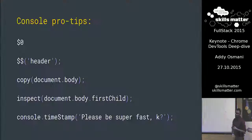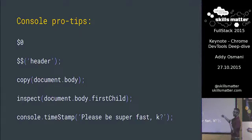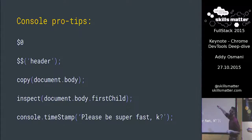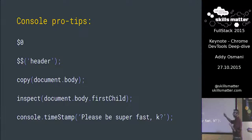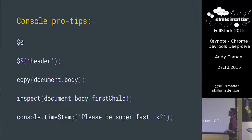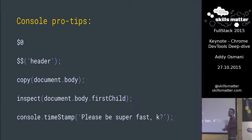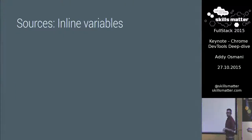Now let's talk about JavaScript. A few years ago, things like console pro tips were all the rage. $0 refers to the last item you inspected in the DOM tree. $$ is something we got standardized cross-browser for querySelectorAll — please don't use this in production, it's for DevTools. You can copy things to the clipboard, inspect things dynamically, use console.timestamp to log times. This is all old stuff. What we've been working on recently is far more interesting.